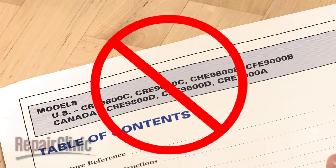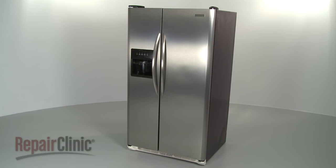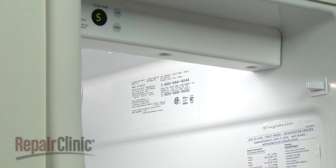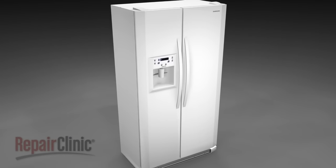Since model numbers found in owner's manuals are often incomplete or incorrect, it's best to search for the number on the appliance itself. Every appliance leaves the factory with a model number label, although it may require some effort to find it.